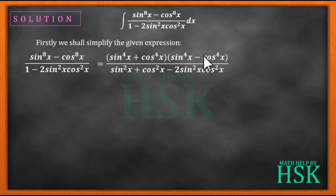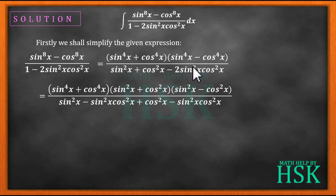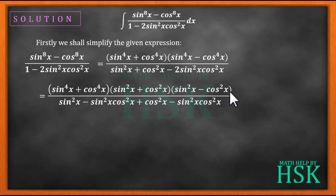Next, we apply the a² - b² formula again to the bracket (sin⁴x - cos⁴x). We consider sin⁴x as (sin²x)² and cos⁴x as (cos²x)², so this becomes (sin²x + cos²x)(sin²x - cos²x).